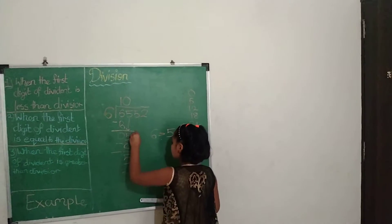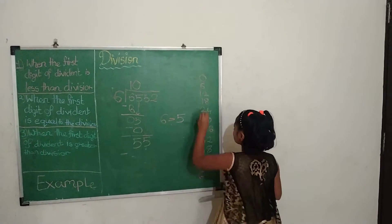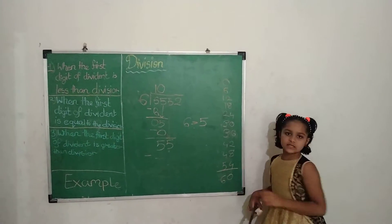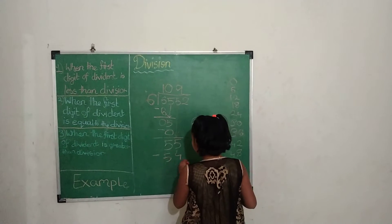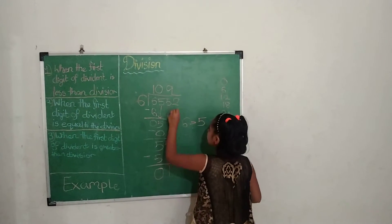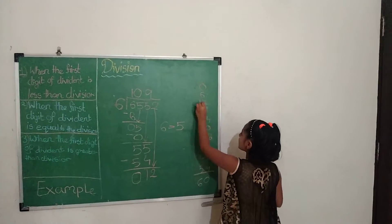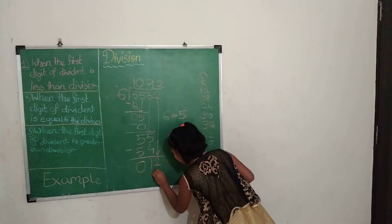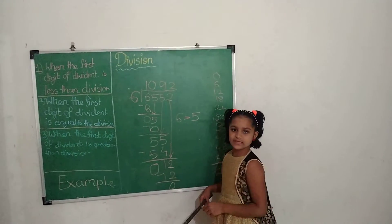Now we bring 5 down, making it 55. In the 6's table, we see 6 nines are 54. So 9 will be written in the quotient and 54 written below. We subtract: 5 minus 4 equals 1, and 5 minus 5 equals 0. Now we bring the next number down, making it 12. In the 6's table, 6 twos are 12, so 2 goes in the quotient. We subtract: 2 minus 2 equals 0 and 1 minus 1 equals 0.